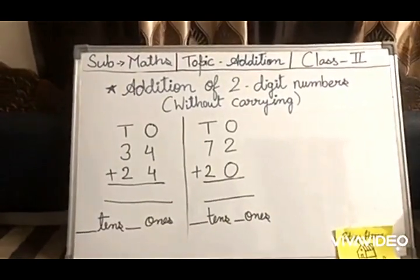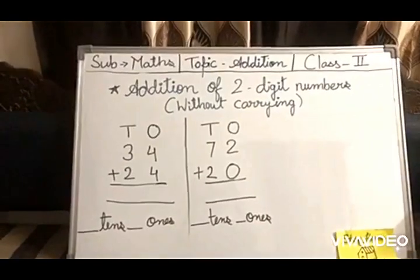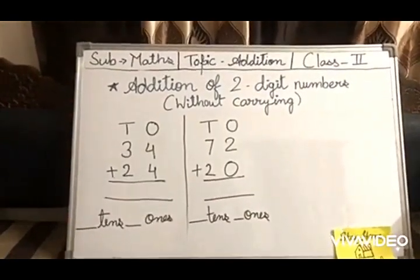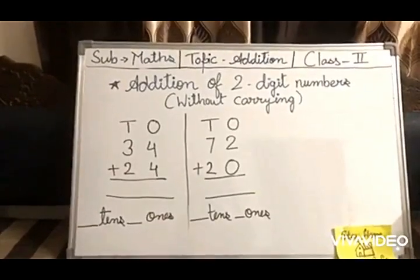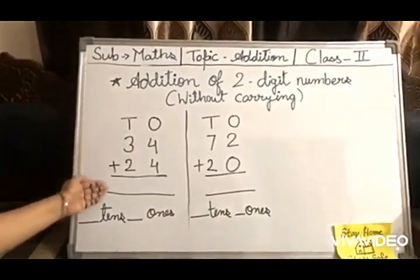Hello kids, today we will learn about addition. Here are some examples of simple addition of two-digit numbers without carrying. These numbers are properly placed in their columns - ones are in the ones column and tens are in the tens column.